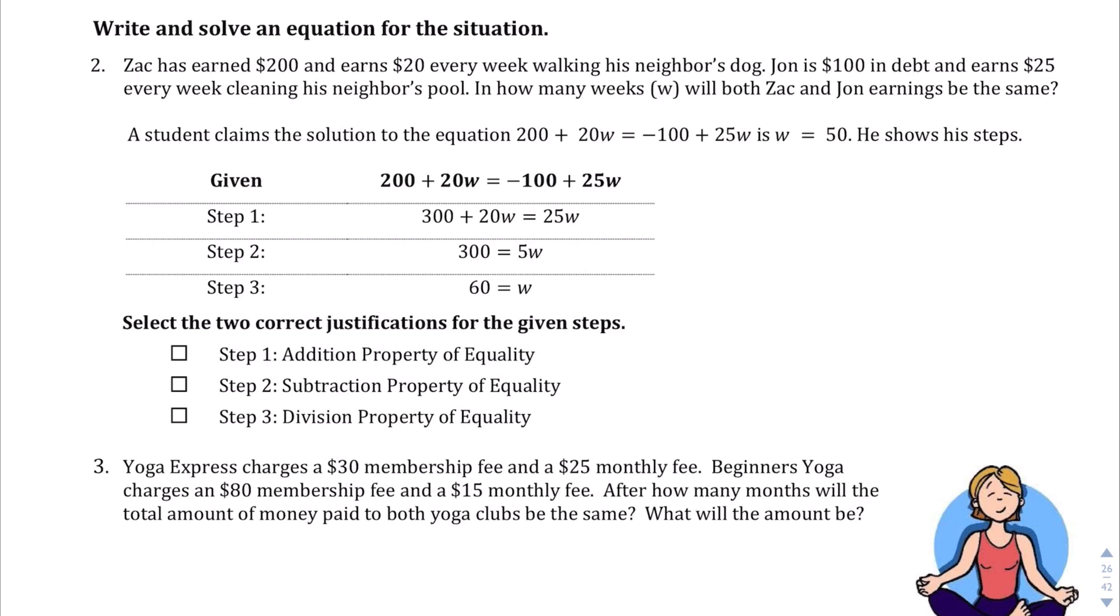Question number 2. Zach has earned $200 and earns $20 every week walking his neighbor's dog. We are asked to select 2 correct justifications for the given steps. Let's take a look from the given to step 1, what happens here? It looks like we're moving this 100 over, so we had to add 100 to both sides to get to step 1. So yes, addition property of equality looks like the correct choice there. From step 1 to step 2, it looks like they subtracted 20w from both sides to get to 5w. And so that would be the subtraction property of equality. Step 3 is the division property of equality too.